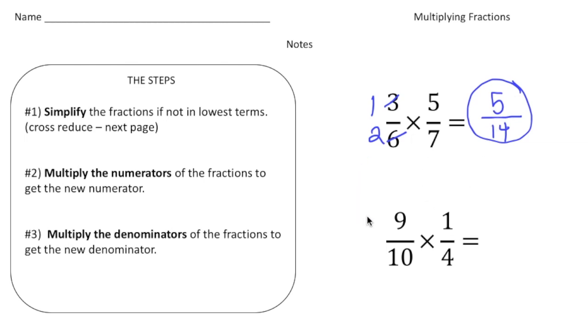Let's do another one. The next problem we have is 9/10 times 1/4. Step number one, can we simplify the fractions? The answer is no. 9/10 is reduced and 1/4 is reduced. Soon you're going to learn about how to cross reduce, but right now we're focusing on just each individual fraction.